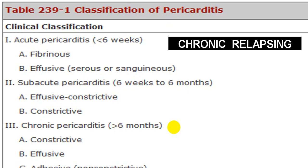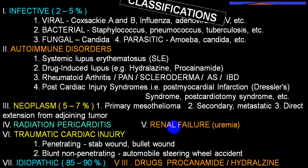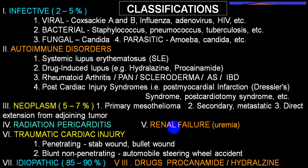Etiology-wise: infective, autoimmune, neoplasm, radiation, traumatic, idiopathic (accounting for almost 85 to 90%), drugs, endocrine, and renal failure. In the infective variety, which accounts for only 2 to 5%, causes include viral, tubercular, bacterial, and fungal. Fungal is very common in persons with severe immunocompromised states. Parasitic infection usually spreads from nearby structures, such as an amebic liver abscess rupturing into the pericardial sac producing amebic pericarditis.